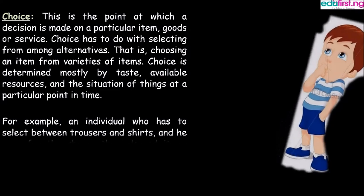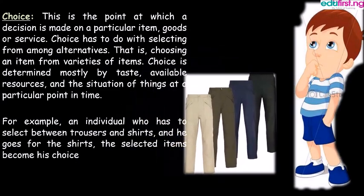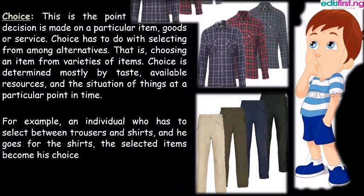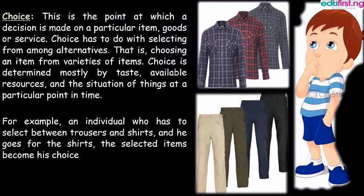The concept of choice. This is the point at which a decision is made on a particular item, good, or service. Choice has to do with selecting from among alternatives — that is, choosing an item from varieties of items. Choice is determined mostly by tastes, available resources, and the situation of things at a particular point in time. For example, an individual who has to select between trousers and shirts and goes for the shirts — the selected item becomes his choice.